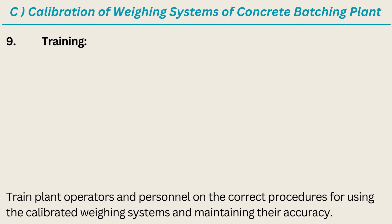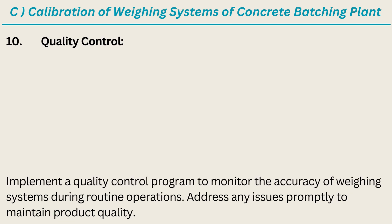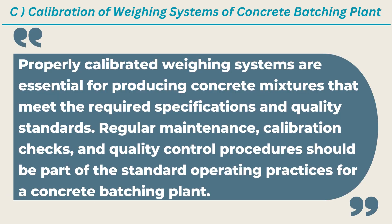Step 9: Training. Train plant operators and personnel on the correct procedures for using the calibrated weighing systems and maintaining their accuracy. Step 10: Quality Control. Implement a quality control program to monitor the accuracy of weighing systems during routine operations. Address any issues promptly to maintain product quality. Properly calibrated weighing systems are essential for producing concrete mixtures that meet the required specifications and quality standards. Regular maintenance, calibration checks, and quality control procedures should be part of the standard operating practices for a concrete batching plant.